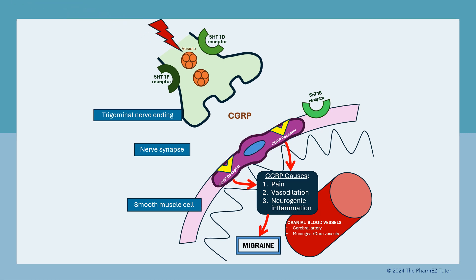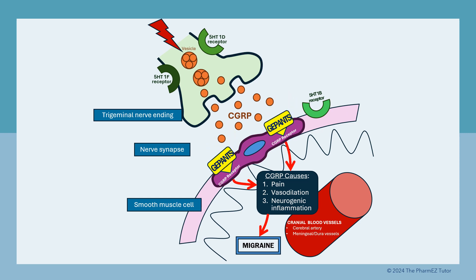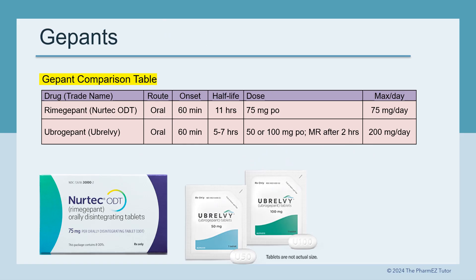So, despite the release of CGRP from nerve endings, the G-PANs occupy and block the binding of CGRP to its receptor. There are two oral G-PANs currently on the market: Rimegepant or NURTEC, and Ubrogepant or Ubrelvy. Both have an onset of 60 minutes. The dose of NURTEC is 75 mg with a maximum daily dose of 75 mg. The dose of Ubrelvy is 50 or 100 mg, which can be repeated after 2 hours, with a maximum daily dose of 200 mg.